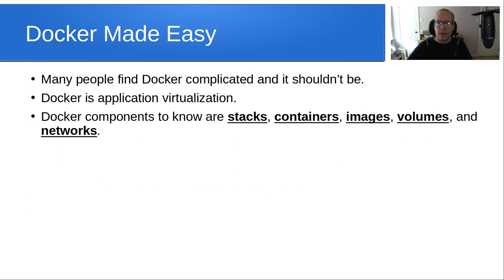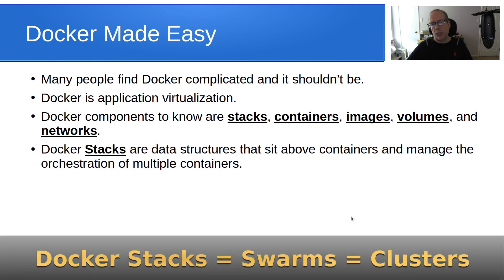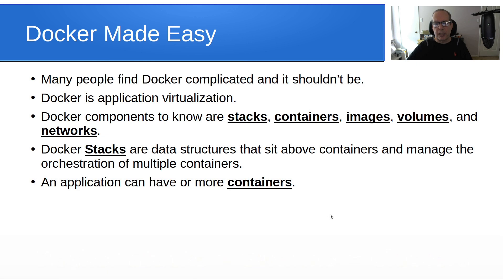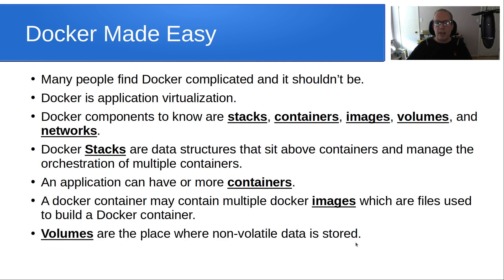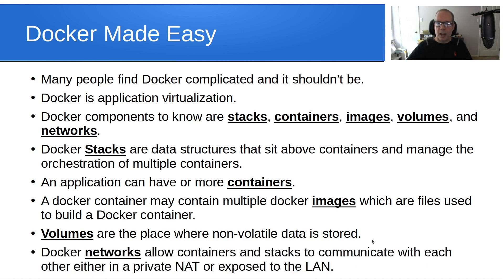Docker components to know are stacks, containers, images, volumes, and networks. Docker stacks are data structures that sit above containers and manage the orchestration of multiple containers. A Docker container may contain multiple Docker images, which are files used to build a Docker container. Volumes are the place where non-volatile data is stored.